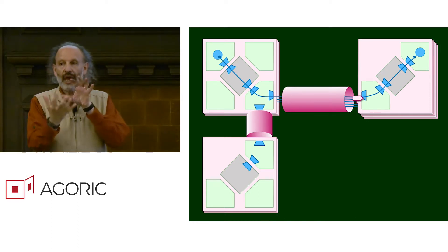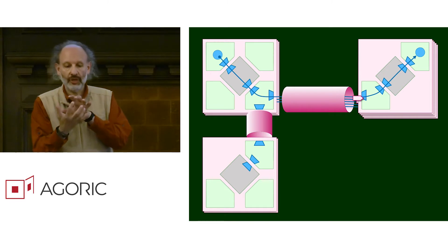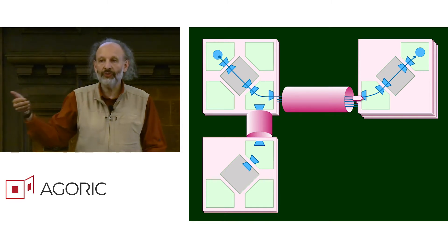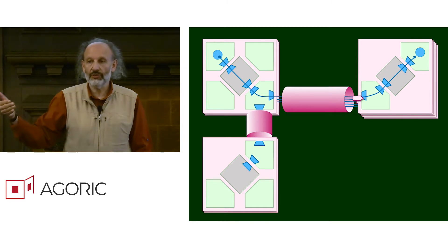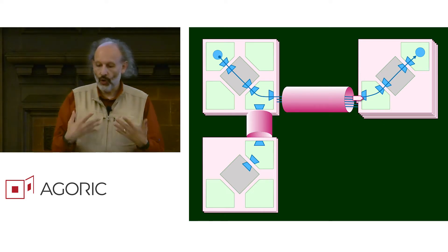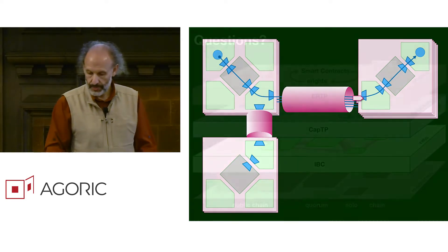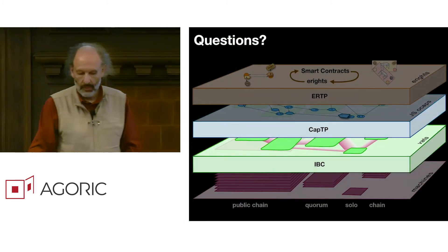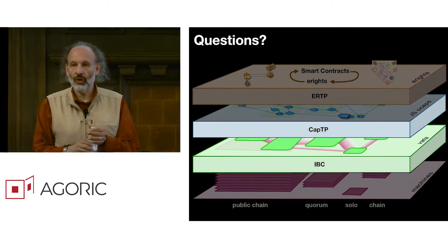These outer cylinders are the IBC layer. The object messages on these capabilities going within the pipe, that's the CAPTP layer built on the IBC layer. And now I'll take questions on that layer.